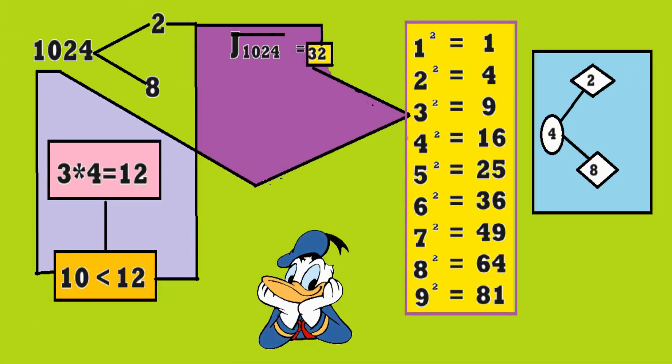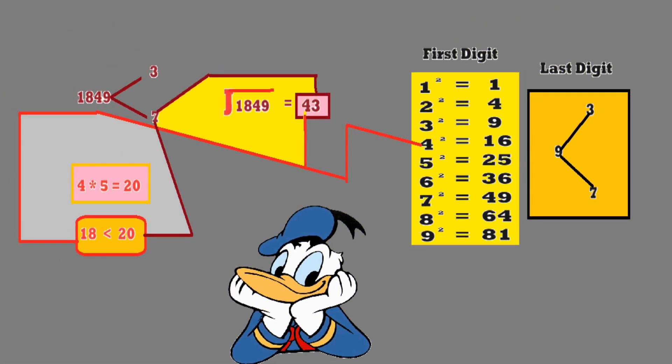Now let's find the square root of 1024. The number ends with 4, so the last digit will be 2 or 8. Taking the first two digits — 10 — we see 10 is greater than 3² (9) and less than 4² (16), so the first digit is 3. Multiplying 3 by the next number 4 gives 12. Since 10 is less than 12, the last digit is the lesser number, 2. So the answer is 32.